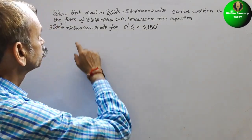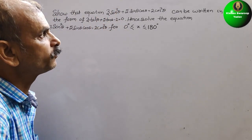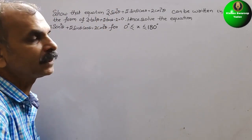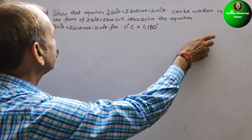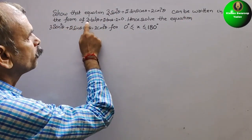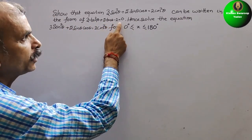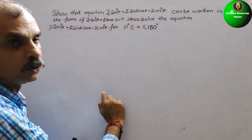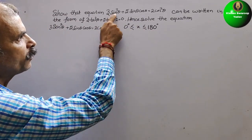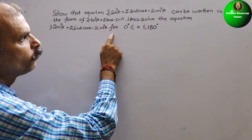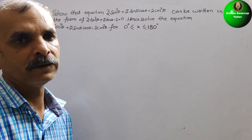Your question is: show that the equation 3sin²θ + 5sinθcosθ = 2cos²θ can be written in the form 3tan²θ + 5tanθ - 2 = 0. Hence, solve this equation for 0° ≤ x ≤ 180°.